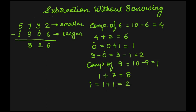Therefore, 5 minus 2 is equal to 3. In this way, we can perform subtraction without using the conventional method of borrowing.